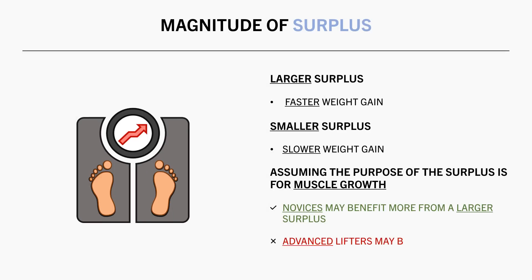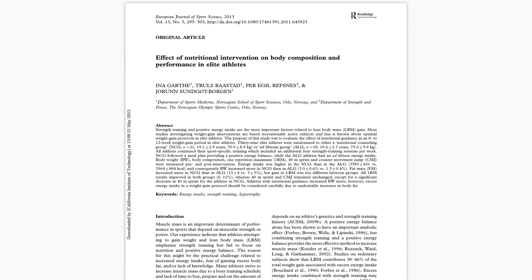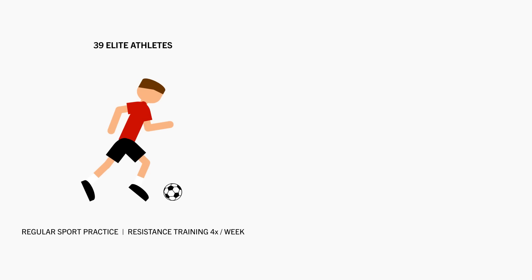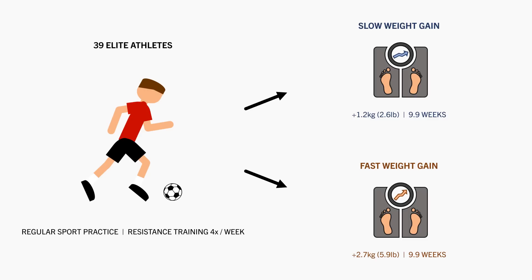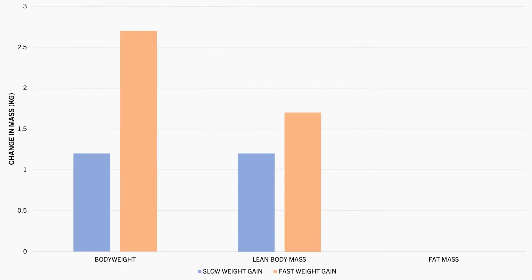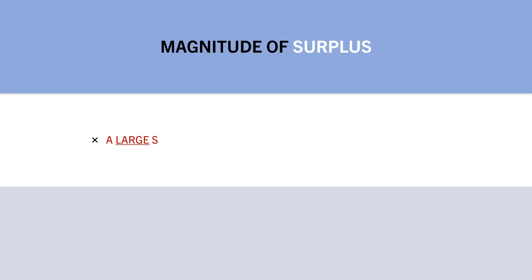However, these same benefits generally aren't observed when more advanced lifters eat in a calorie surplus. This study compared the effects of a smaller versus larger surplus on body composition changes in 39 elite athletes from the Norwegian Olympic Sports Centre, who performed regular sports practice plus 4 resistance training workouts per week. Half the subjects gained 1.2kg in around 10 weeks, while the other half gained 2.7kg over the same time frame. Lean mass increased in both groups with slightly greater gains in the faster weight gain group, but the fast weight gain group also gained significantly more body fat. So in highly trained athletes, a larger calorie surplus may promote slightly more muscle growth, but it is likely to also increase fat gain disproportionately.